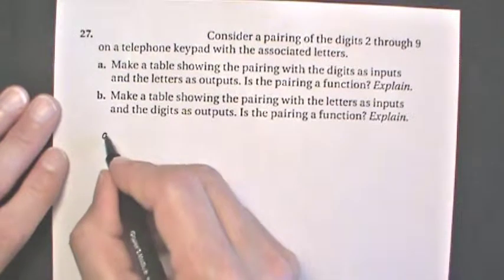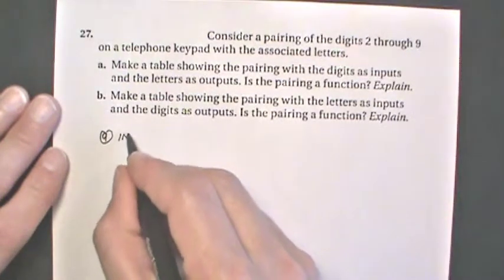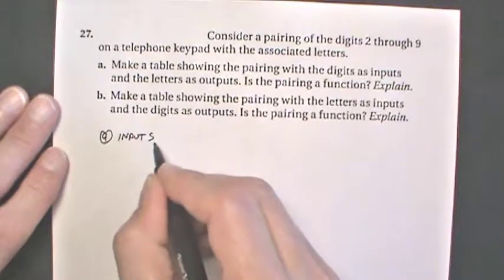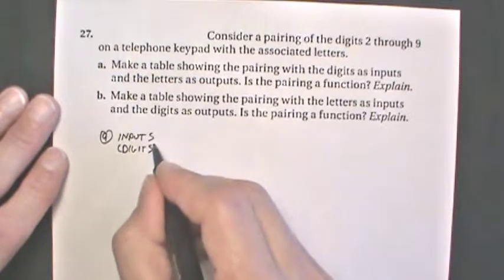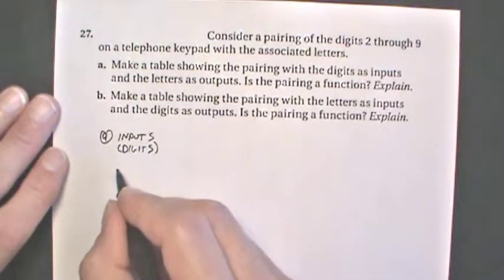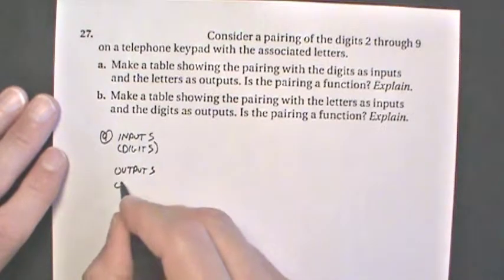So for A, let's write inputs, which are going to be digits. We have our outputs, which are going to be our letters.